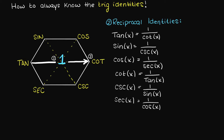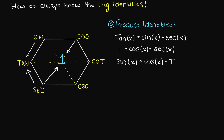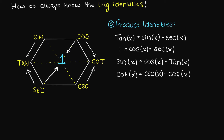I'm going to quickly go through and complete the rest to show you it works. We can also find the product identities using this hexagon — we select the function we want the product identity for and multiply together its two adjacent functions. So for the product identity for tangent, we just multiply secant and sine together. As you can see, this works for all the product identities as well.